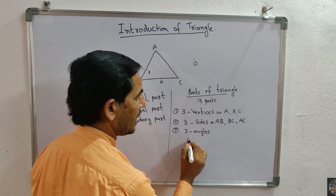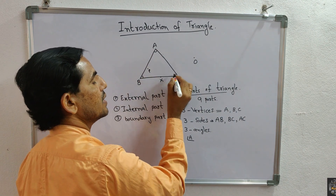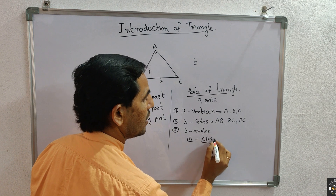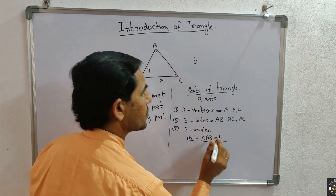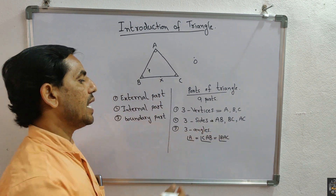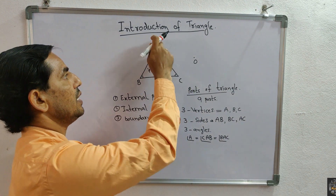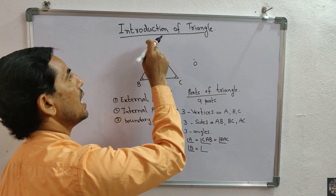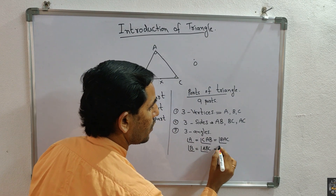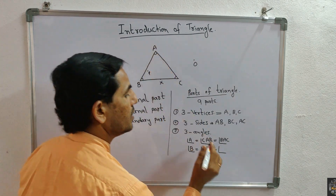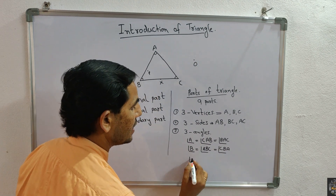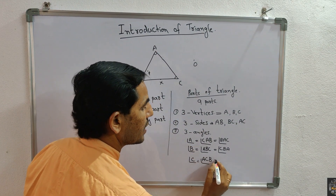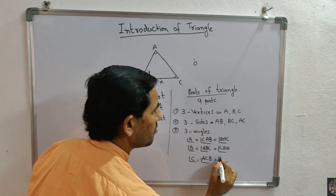The three angles are angle A, angle B, and angle C. Angle A can be written as angle CAB or angle BAC. Angle B can be written as angle ABC or angle CBA. Angle C can be written as angle ACB or angle BCA.